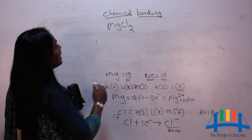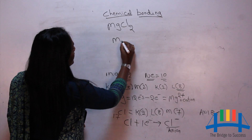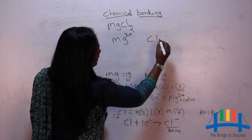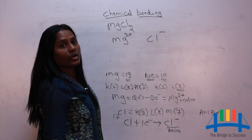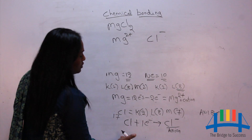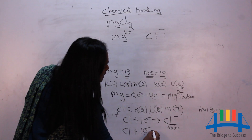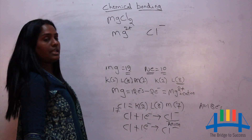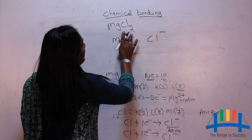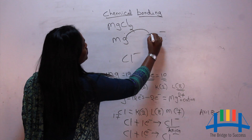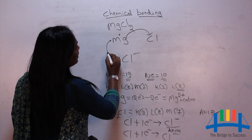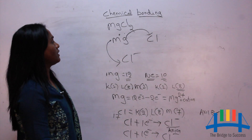Now let's represent the ionic bond formed between Mg²⁺ and Cl⁻. There are two chlorine atoms. Each chlorine gains one electron to become a chloride ion. Magnesium has two electrons — it donates one electron to each chlorine atom.